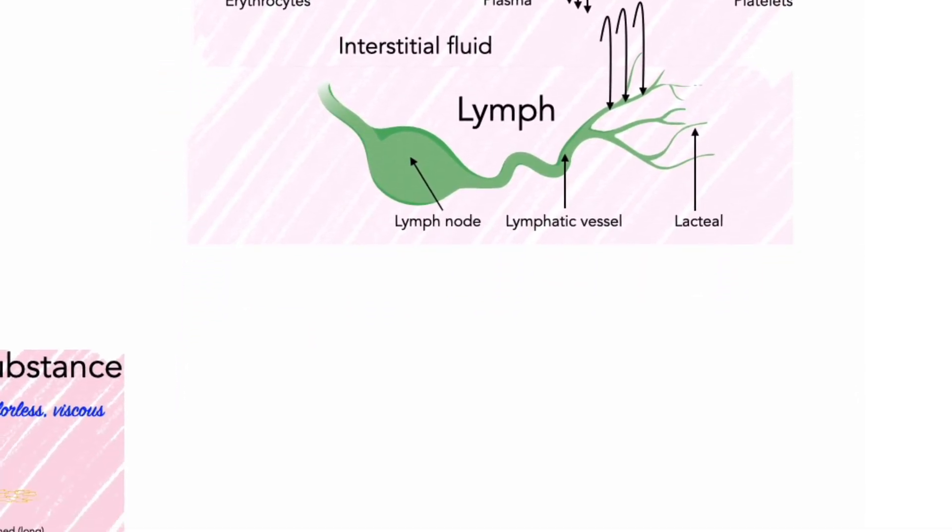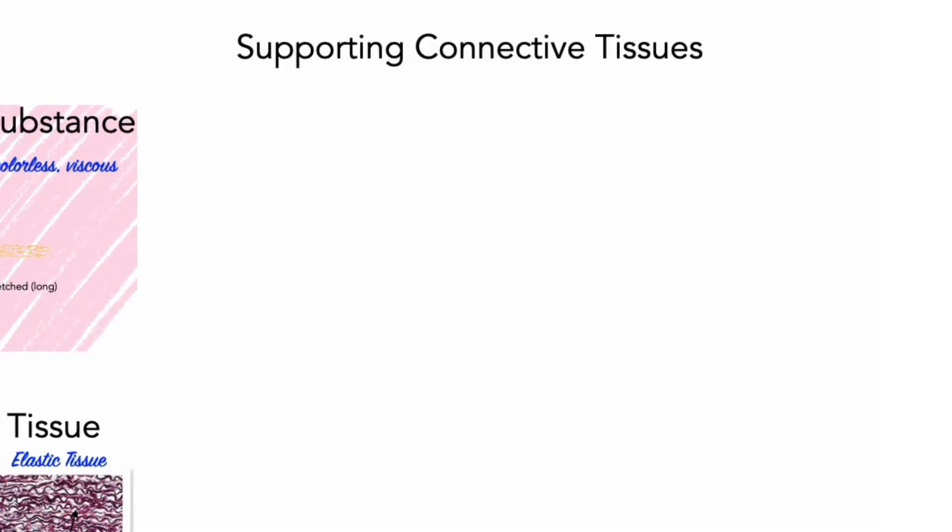The third and final category of connective tissues is the supporting connective tissues, namely cartilage and bone. Cartilage and bone provide a strong framework that supports the rest of the body. In these connective tissues, the matrix contains numerous fibers and, in some cases, deposits of solid calcium salts.